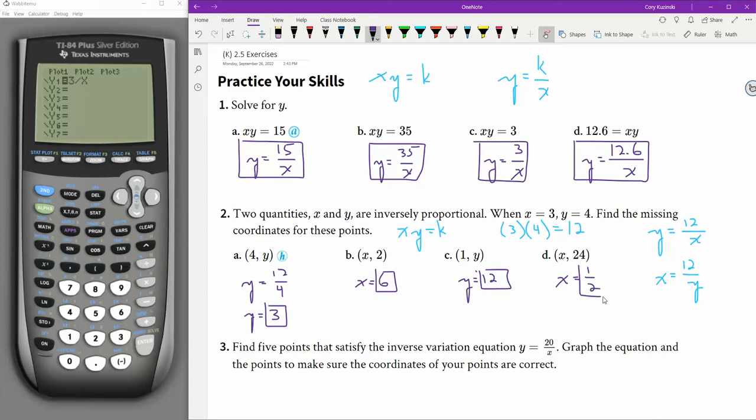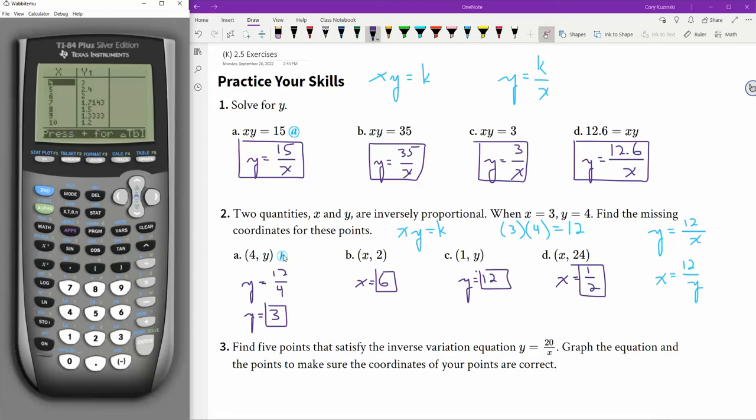Here's another thing we could have done is go to y equals, take this equation right there, punch it in to the y equals 12 divided by x. Go to our, well, there's the graph. I didn't want the graph, though. I wanted the table. And I could go to x equals 4. In fact, there it is. 4 and 3. There's my answer.